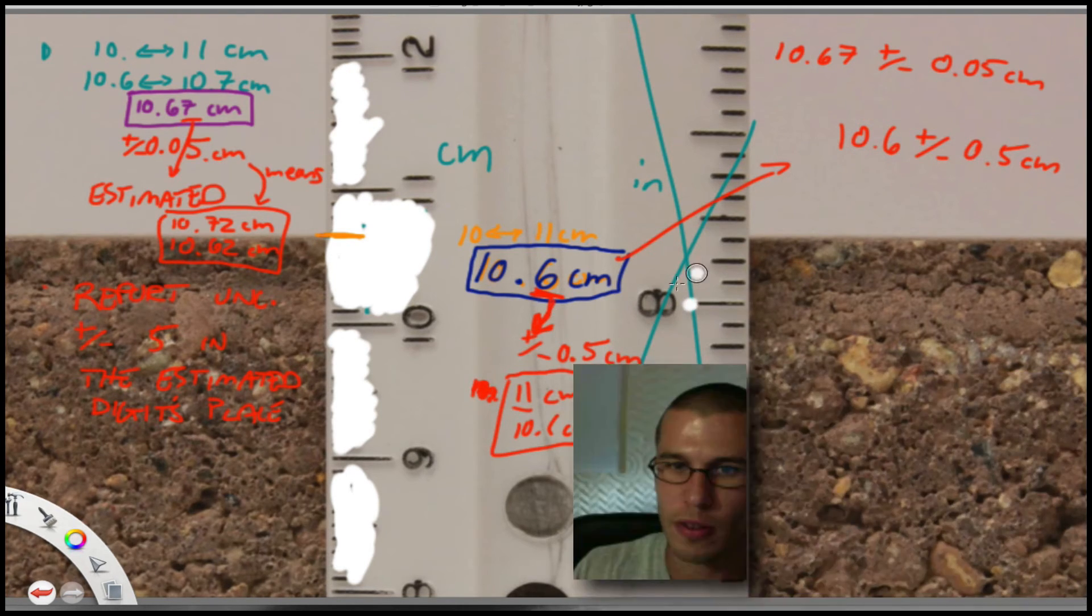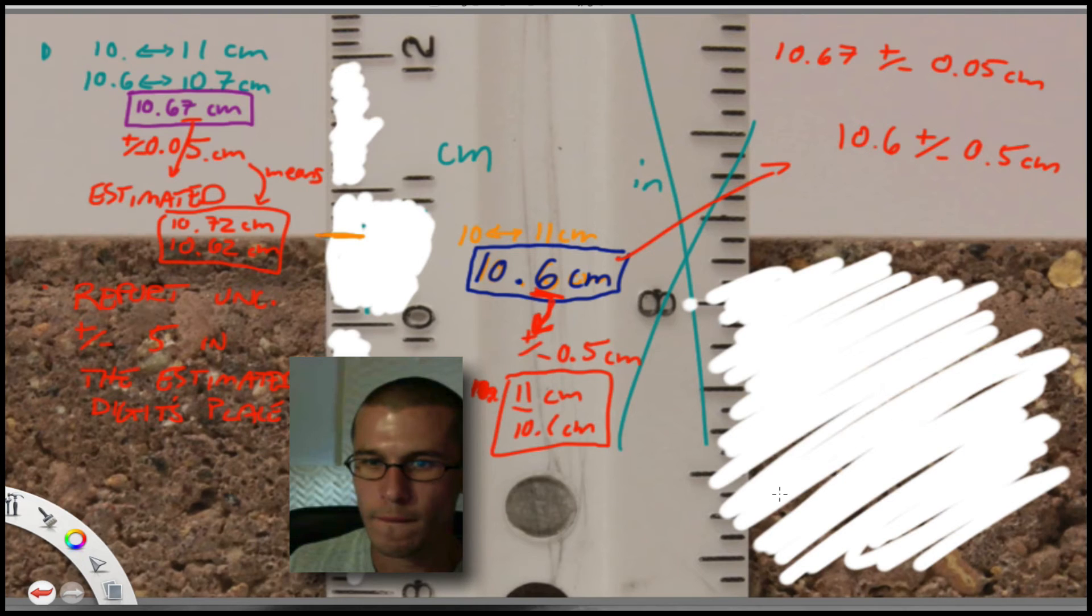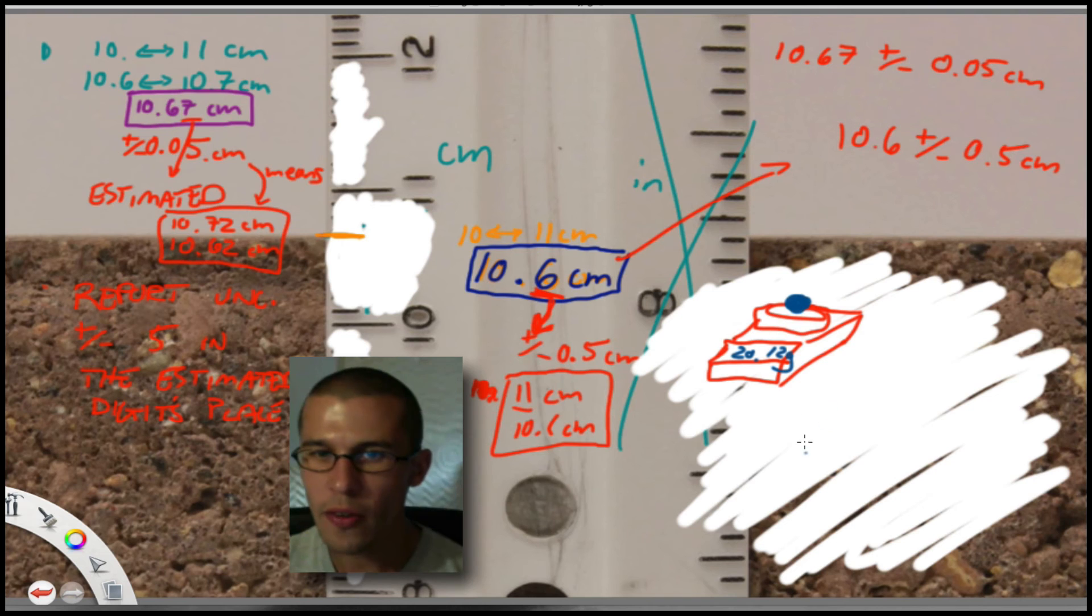So for example, let's just use a quick example here. I'll just blank some space out over here. Let's just say that you've got a scale, you get this little scale here. Here it is. And you put on top of this scale, there's a scale. Let's say that we put a little rock on top of this scale and it reads out, it spits out to you that this is 20.12 grams. Now what you can do with this digital scale, because it's digital, it's not analog anymore, and we're assuming that it's calibrated, right?